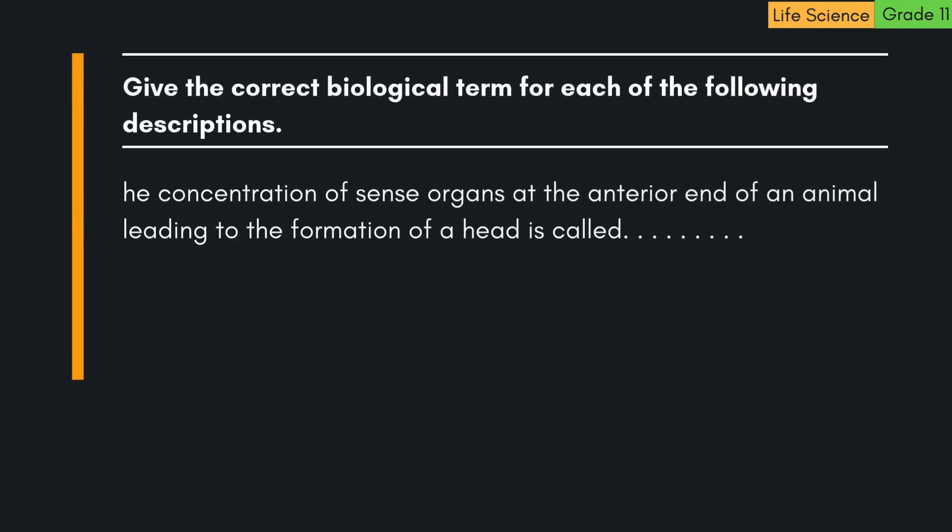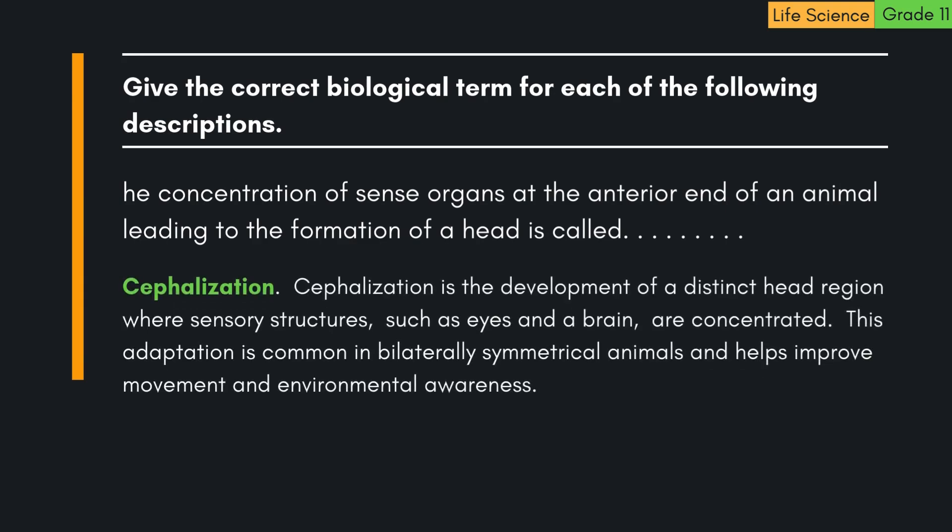The concentration of sense organs at the anterior end of an animal leading to the formation of a head is called cephalization. Cephalization is the development of a distinct head region where sensory structures, such as eyes and a brain, are concentrated. This adaptation is common in bilaterally symmetrical animals and helps improve movement and environmental awareness.